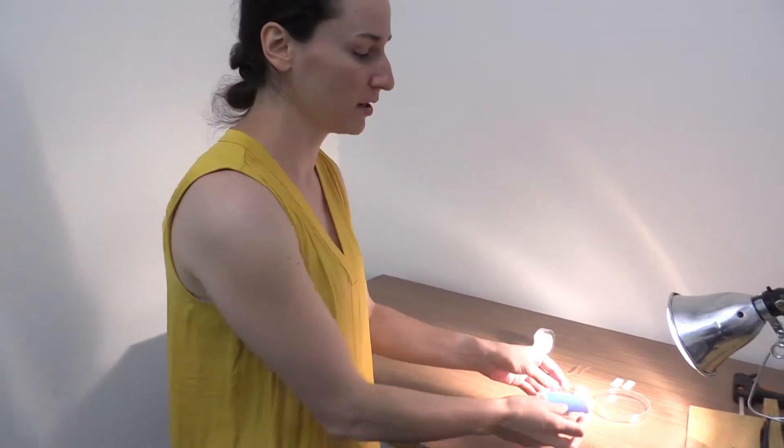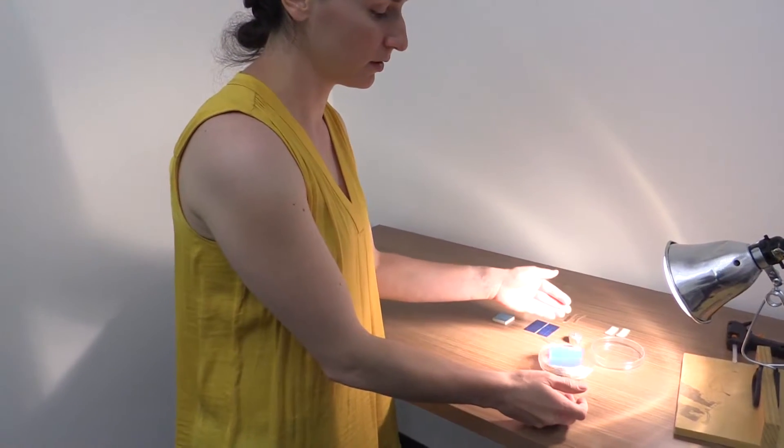Today we're going to be building a solar spinner, which is a solar cell attached to a motor attached to a stand. When we put it into the light, it'll start to spin.